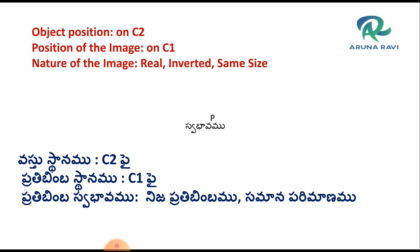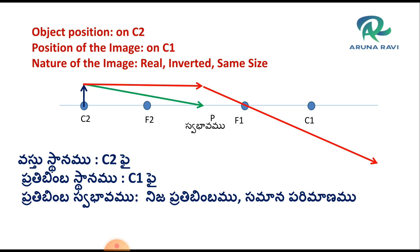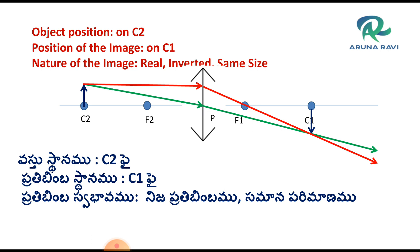Now, the object is at C2. The convex lens has points F1, C1, F2, and C2. If the object is placed at C2, the ray passing parallel to the principal axis converges at the focus, and the ray through the pole is undeviated. The image is formed at C1 and is the same size. The position of the object is C2, the position of the image is C1, and the nature of the image is real, inverted, and same size.